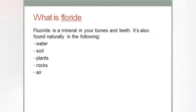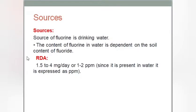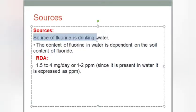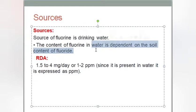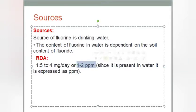We are going to see what the different sources are. The source of fluorine is basically drinking water. The content of fluorine in water is dependent on the soil content of fluoride. The RDA is 1.5 to 4 mg a day, which is 1.2 ppm. Since it is present in water, it is expressed as ppm.